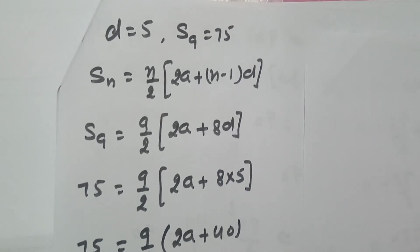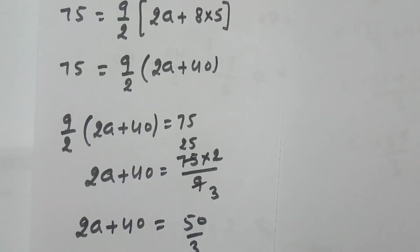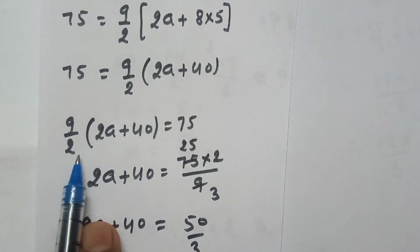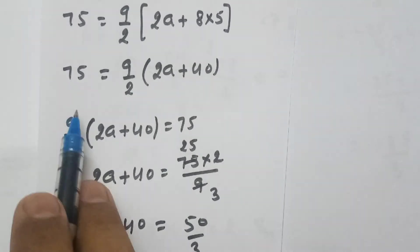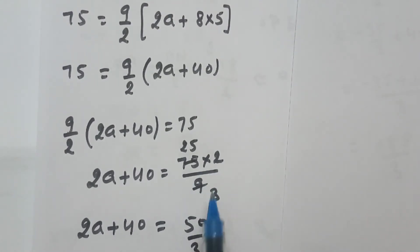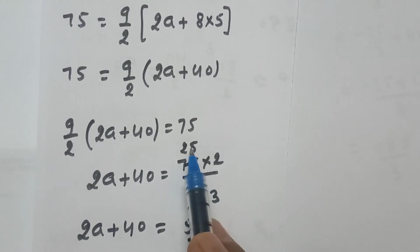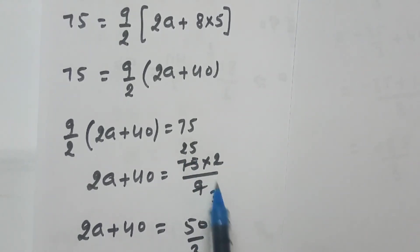So the equation we get is: 75 equals 9 by 2 into 2a plus 40. We can rewrite this as 9 by 2 into 2a plus 40 equals 75. The 9 by 2 multiplying on the right side will divide to the other side, becoming 75 into 2 over 9. Using the table of 3: three 3s are 9 and three 25s are 75, so 25 twos are 50.